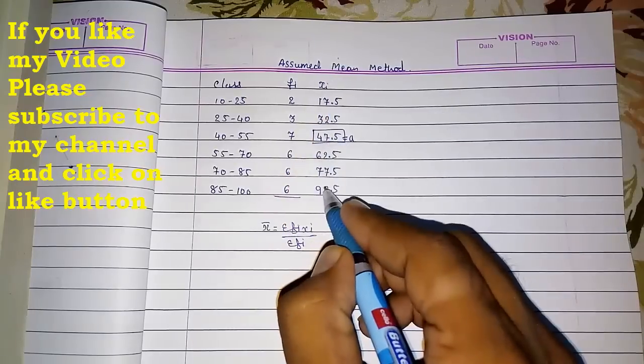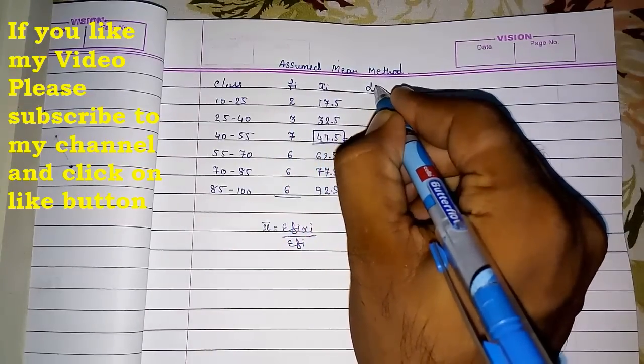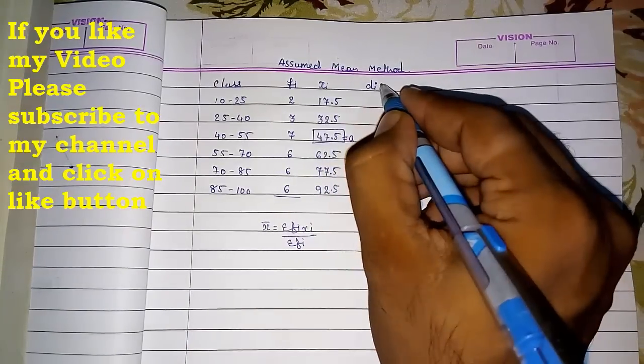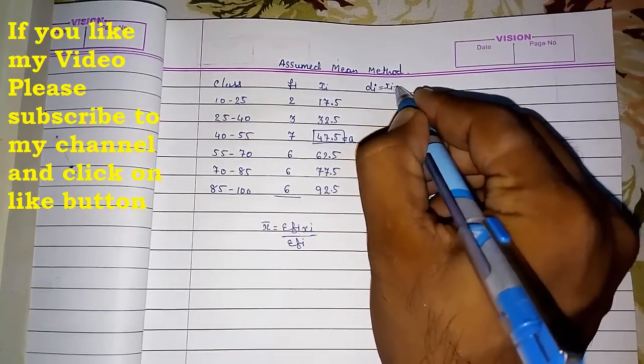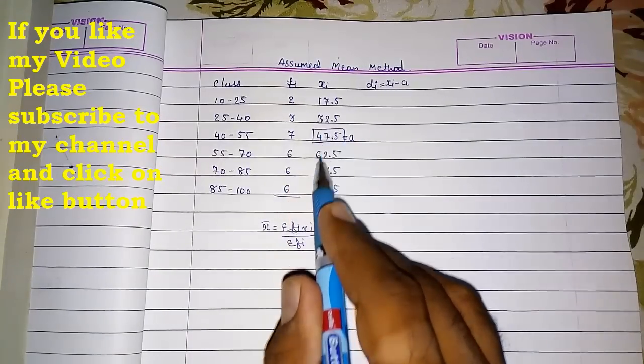Now what we have to do? For finding, these numbers were big, so we are finding a different xi, that is called di. And what we are doing? Not much, but actually you should know, we are subtracting this assumed mean from all these numbers.